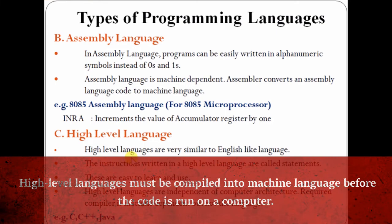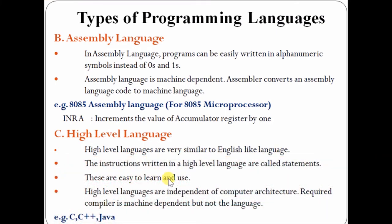High level languages are very similar to English-like language. The instructions written in high level language are called statements. They are easy to learn and use. High level languages are independent of computer architecture. High level language needs special software — either a compiler or an interpreter — to convert it to machine code. Examples of high level programming languages include C, C++, and Java.